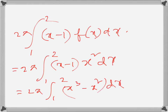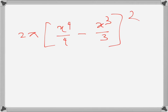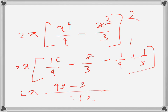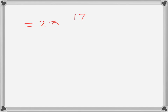So that's 2π times [x to the power 4 over 4 minus x cubed over 3] evaluated from 1 to 2. That gives 2π times (16 over 4 minus 8 over 3) minus (1 over 4 plus 1 over 3). Simplifying: 48 minus 32 minus 3 plus 4 over 12, which gives 2π times 17 over 12, equal to 17π over 6 cubic units. That's the volume generated.